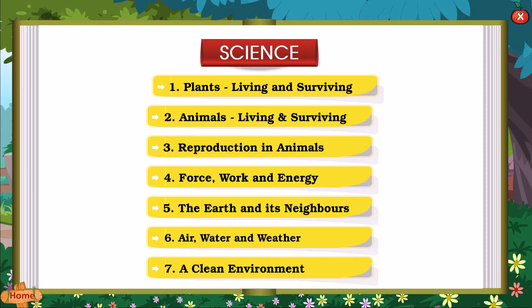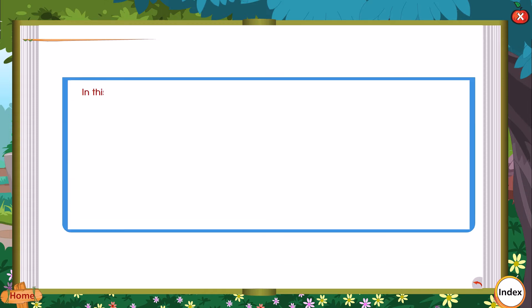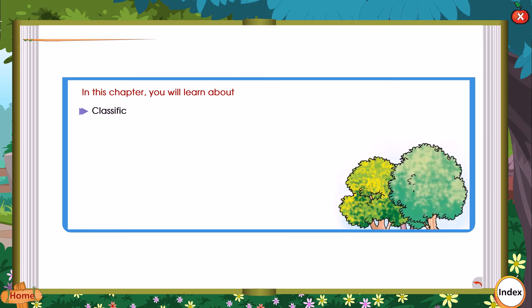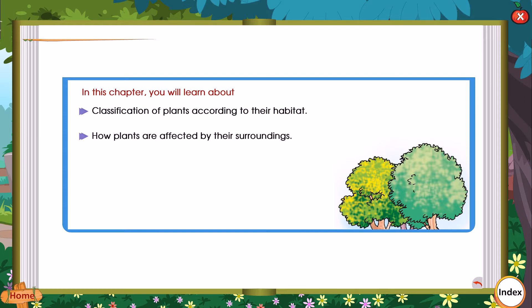Plants: Leaving and Surviving. In this chapter you will learn about: classification of plants according to their habitat, how plants are affected by their surroundings, how plants of the grass family are useful to us, insectivorous plants, and rainforests.